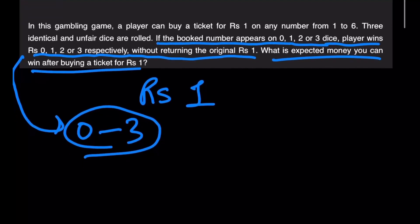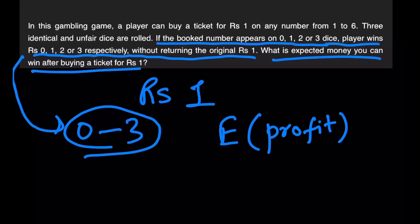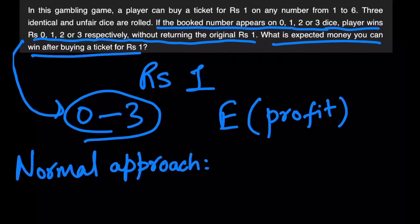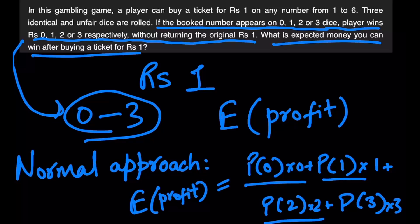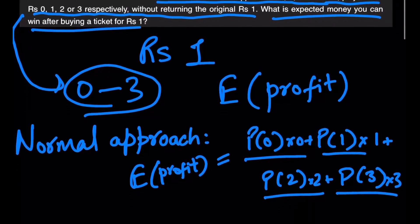So basically we have to calculate the expected amount of profit that we receive by playing this game. Now the normal approach that usually comes to people's mind is calculate the probability of winning zero games, the probability of one game, probability of winning two games, and the probability of winning three games. And the expected profit becomes the summation of these three values over here.